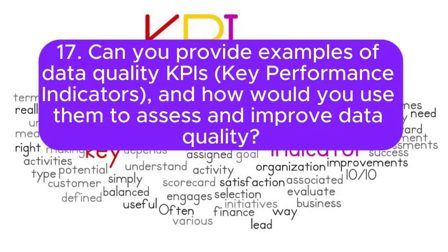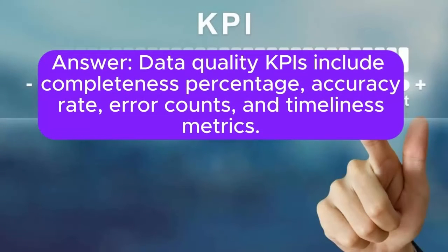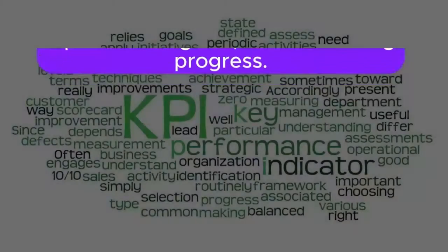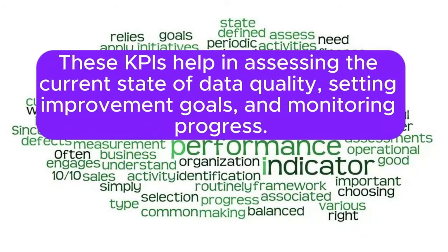17. Can you provide examples of data quality KPIs (key performance indicators) and how would you use them to assess and improve data quality? Answer: Data quality KPIs include completeness percentage, accuracy rate, error counts, and timeliness metrics. These KPIs help in assessing the current state of data quality, setting improvement goals, and monitoring progress.